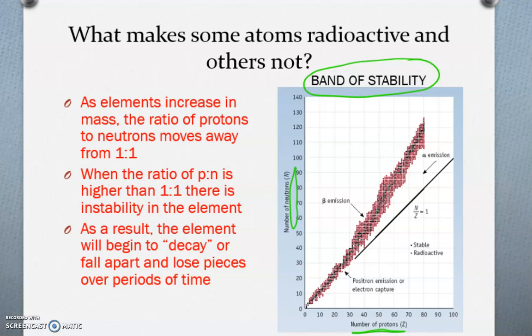But as the ratio of the number of protons and neutrons moves away from this perfect 1 to 1 ratio, we start to see some instability in the nucleus of the element. And as a result, the element will begin to decay radioactively.